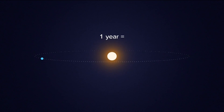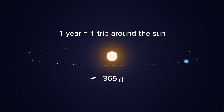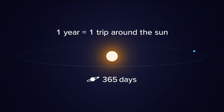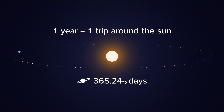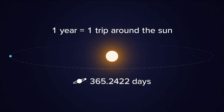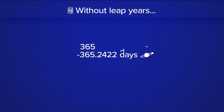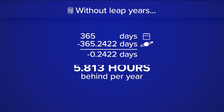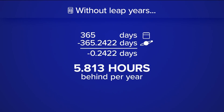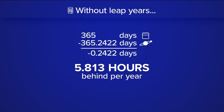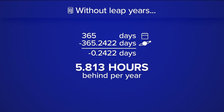The Earth takes one year to revolve around the sun — not exactly. It actually takes 365.2422 days. So when you subtract that and find the difference, it's not zero. We realize we're behind about 5.8 hours each year. While this is a small number, over decades and centuries, this would eventually have an impact on our calendar.